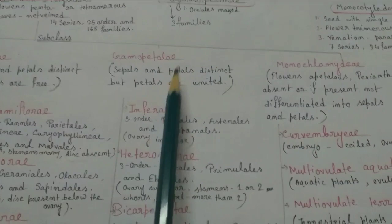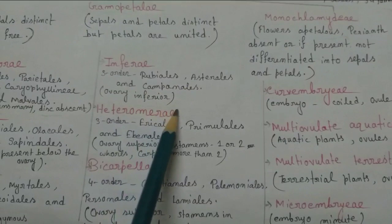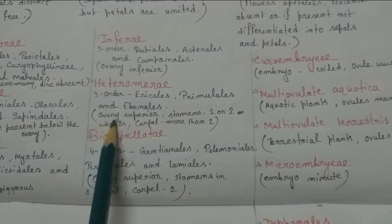Now come to the subclass Gamopetalae. Gamopetalae is also divided into three series: Inferae, Heteromerae, and Bicarpellatae. In case of Inferae there is ovary inferior, but for the Heteromerae and Bicarpellatae both are ovary superior.